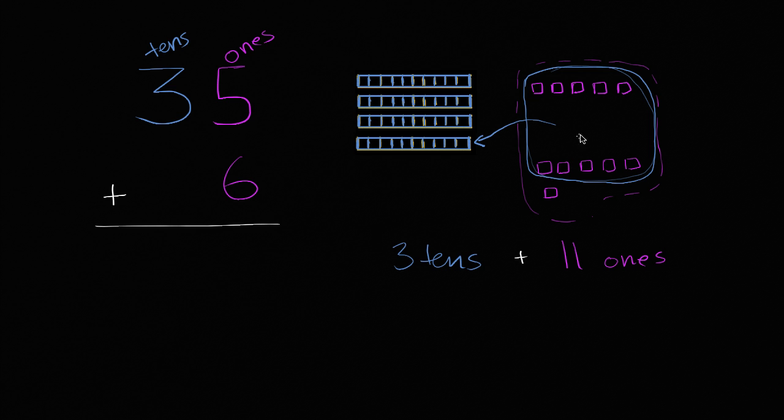So now what do we have? So when you regroup like this, you see that you have one, two, three, four tens, four tens, and how many ones do you have now? Four tens plus, well, I've regrouped all of these 10 ones, and all I have left is this, this one, one right over there. So I could write this as four tens plus one, one.